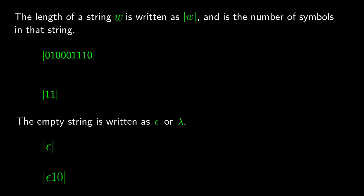One thing we can talk about with strings is the length of a string. We typically call strings w, and we use the absolute value notation for length — just like the size of a set. We count the number of symbols in that string; it doesn't matter if they're the same or different, each symbol counts as one. So for the string 0, 1, 0, 0, 0, 1, 1, 1, 0, there are 9 symbols, so the length is 9.